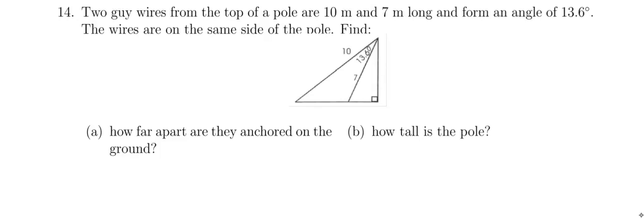This question says two guy wires from the top of a pole are 10 meters and 7 meters long, respectively, and they form an angle of 13.6 degrees, so that's this angle right in there. The wires are on the same side of the pole.